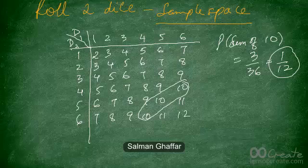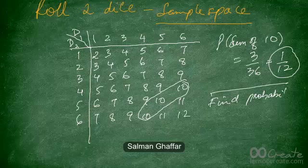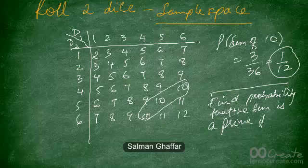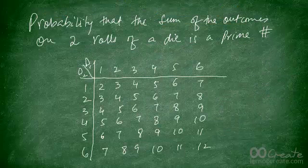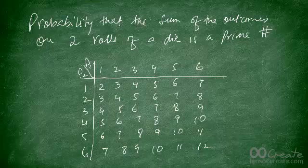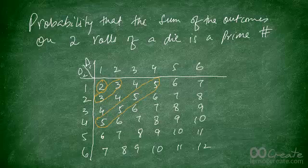Here's a question for you: find the probability that the sum is a prime number when rolling 2 dice. Pause the video and figure out the answer. The prime sums possible are 2, 3, 5, 7, and 11.